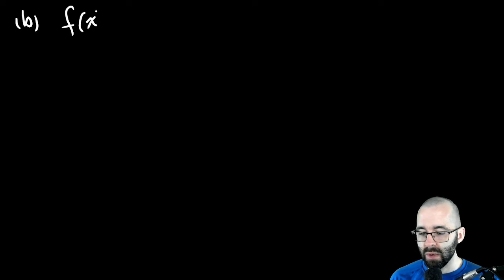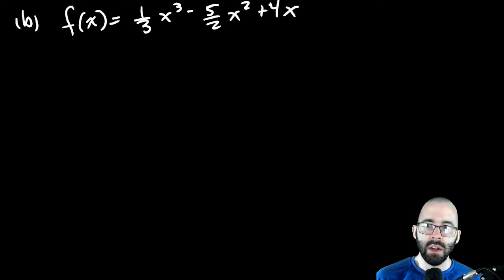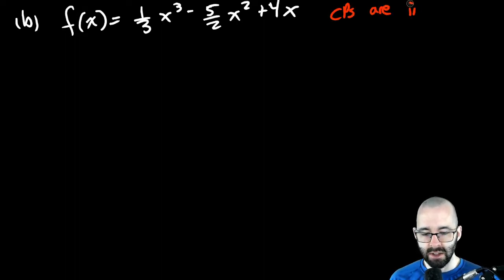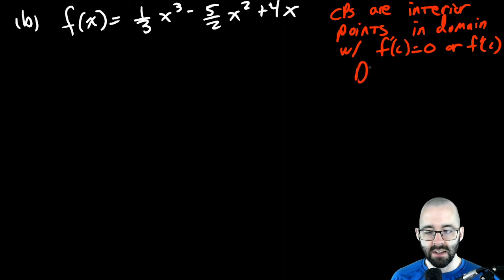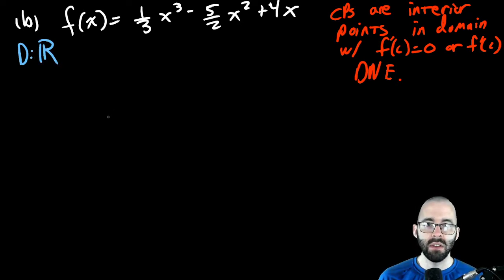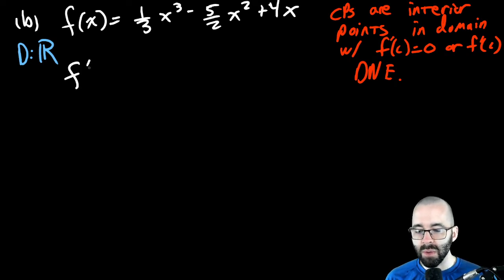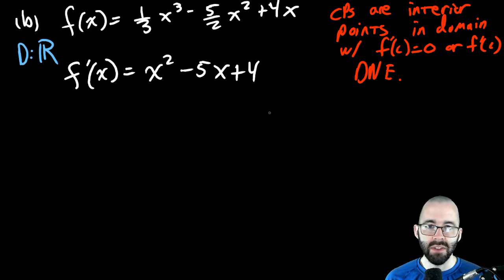What about analytically? If we have a cubic polynomial and we want to find critical points — critical points are interior points in the domain where F prime of C equals zero or F prime of C doesn't exist. The domain of a cubic function is all real numbers. The second part is finding when the derivative equals zero. Using the power rule, we get F prime of x equals x squared minus 5x plus 4.